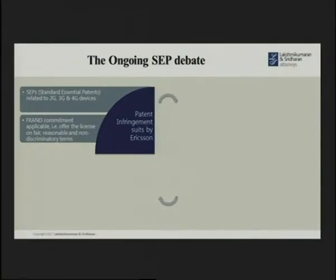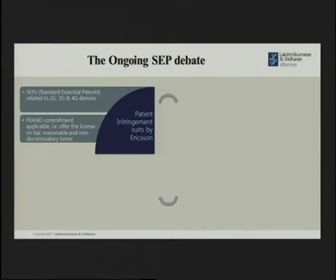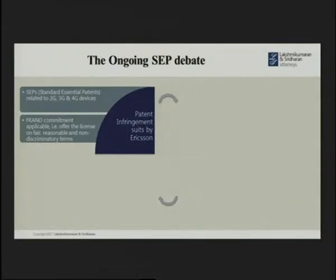The unique thing about a standard essential patent is it's generally covered by what is called a FRAND commitment. A FRAND commitment is a commitment by the patentee in the relevant organization — they make an announcement to the world that these are the patents that cover these standardized technologies, but because they are standardized and the purpose of standardization is to proliferate this technology and make them interoperable, they give a commitment to license it to anyone who is willing on a fair, reasonable, and non-discriminatory basis. That's FRAND — if I have a patent covering a standardized technology, I give my commitment to any willing licensee on a FRAND basis.